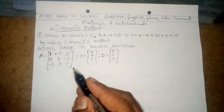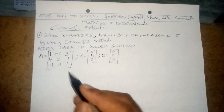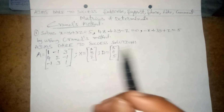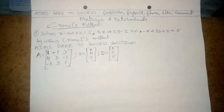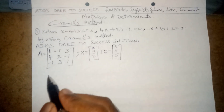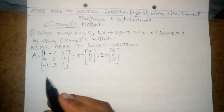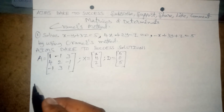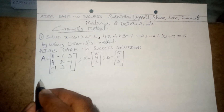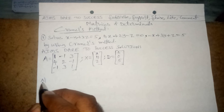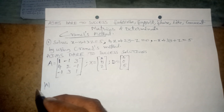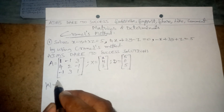Cramer's method, Gauss-Jordan, and matrix inversion are three co-brothers — three methods that are very important and easy. Now I want to find Δ (det A). Δ equals the determinant of [1, -1, 3; 4, 2, -1; -1, 3, 1].